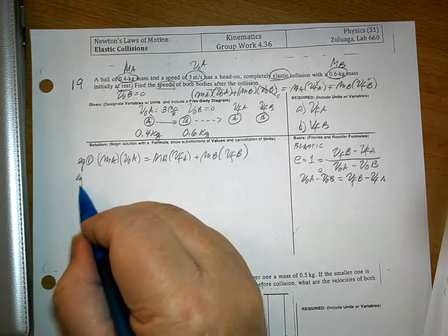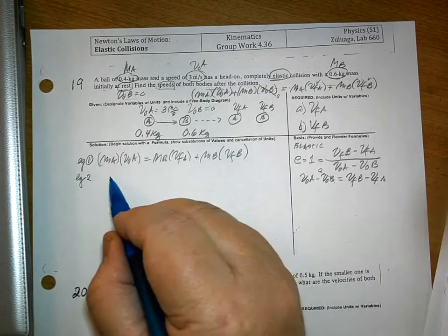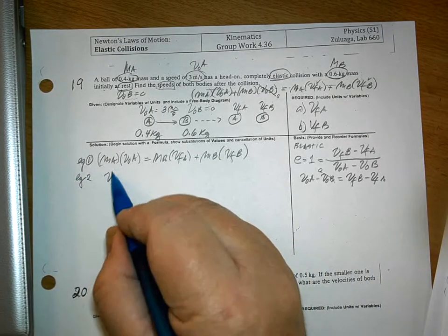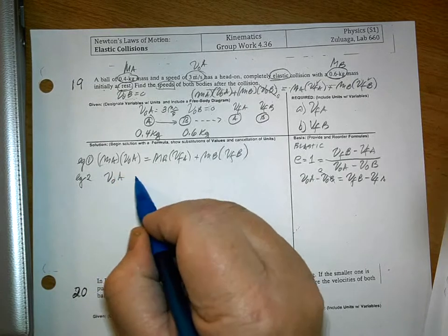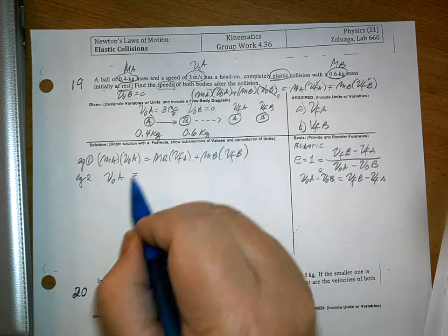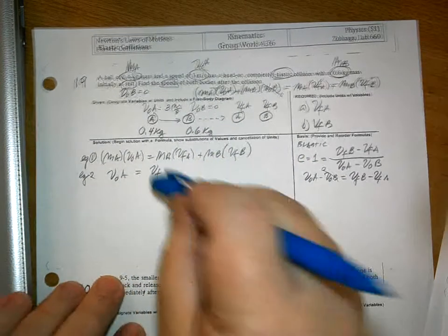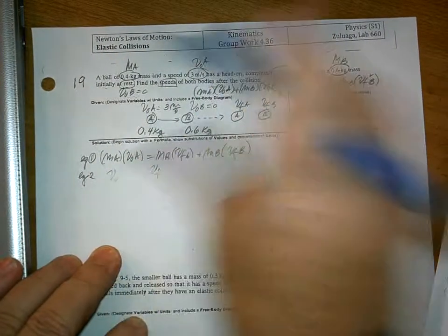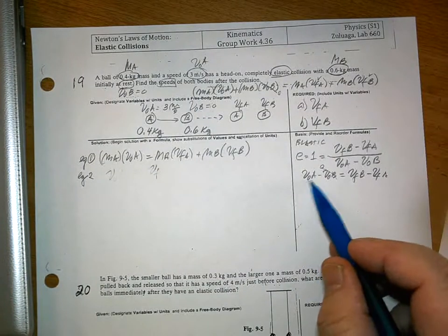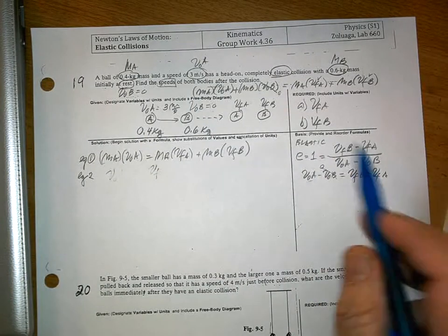So, equation 2 is VOA is equal to VF... Hold on. We have to do... we can't do it in terms of this. We have to use one of the two unknowns.